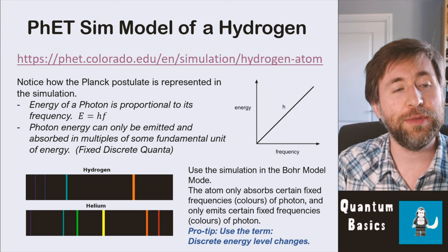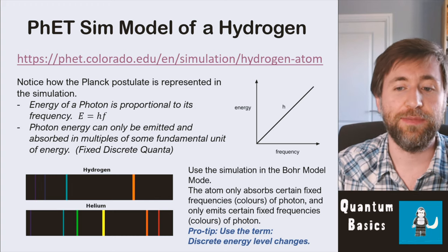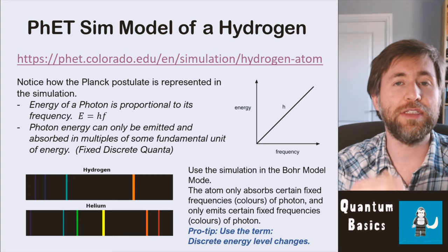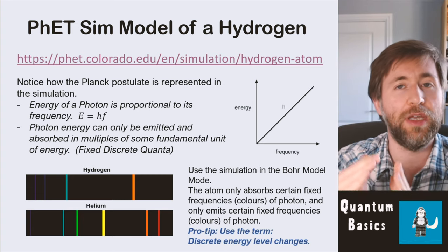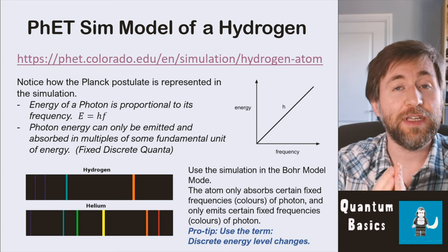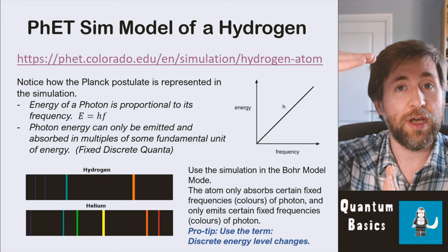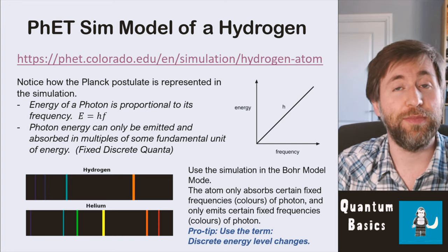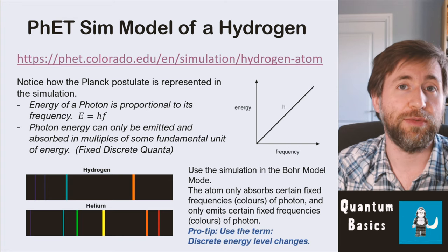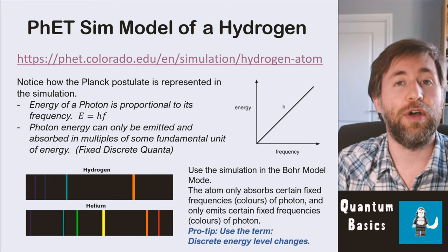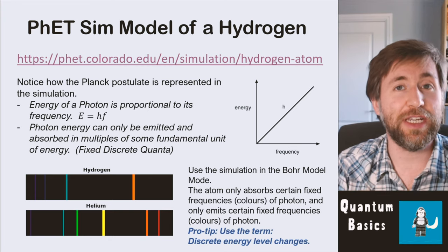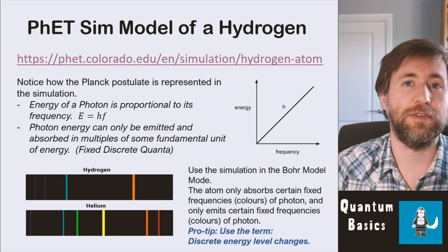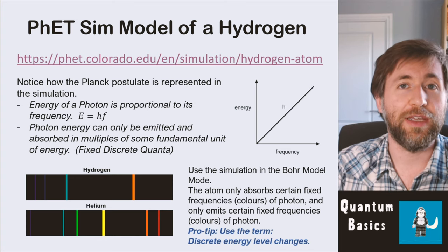The atom of hydrogen only absorbs and only emits these fixed frequencies of light. Here's the pro tip when explaining this: discuss discrete energy level changes — there are only certain fixed energy level changes possible. When it absorbs light, there are fixed energy level changes the electron can move up, so it will only absorb those corresponding frequencies. When electrons de-excite and come down the energy levels, there are only certain fixed discrete energy level changes possible, corresponding to the different possible energies and frequencies of photons.